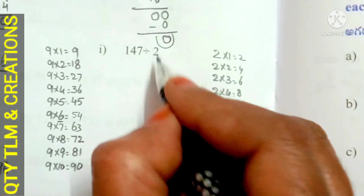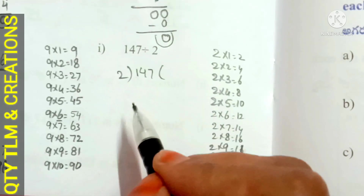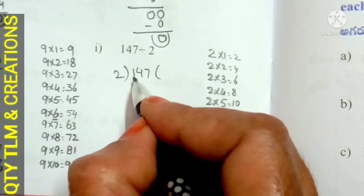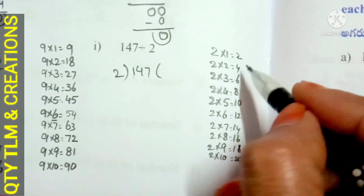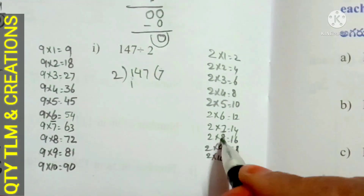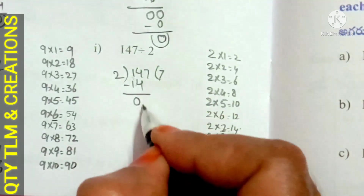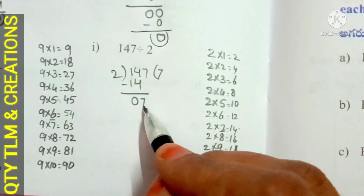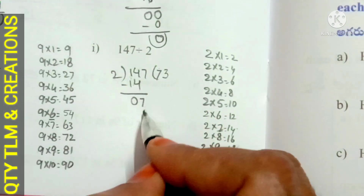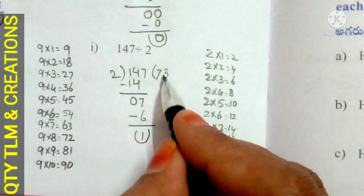Next, I. 144 divided by 2. We start division from the hundreds place. 1 is less than 2, so we take 1 and 4 together: 14. 2 divides 14 for 7 times; 2 sevens are 14. Subtract 14 from 14, we get 0. Bring down 4. 2 divides 4 for 3 times... wait, 2 divides 7 for 3 times; 2 threes are 6. Subtract 6 from 7, we get 1. Remainder is 1, quotient is 73.